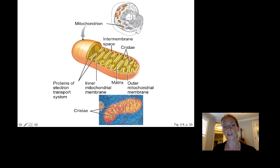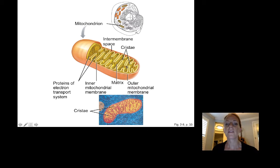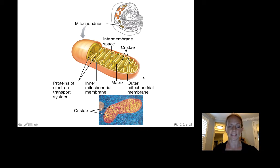Here's a picture of a mitochondrion — in cross-section it looks like a little bean. The folds are the cristae. The inner part is the matrix. Various compartments help the mitochondria sort out the different enzymes it needs to make ATP.